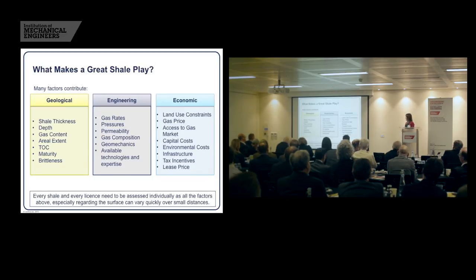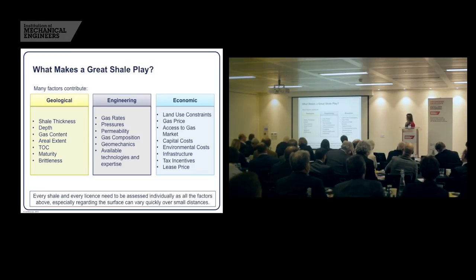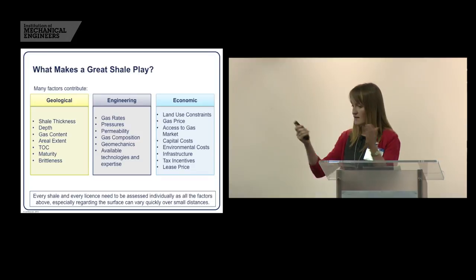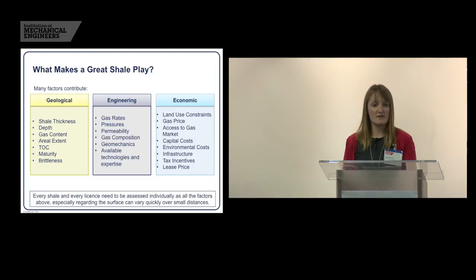So what do we need to make a great shale play? Well, we need a combination of the geological, engineering, and economic factors. I think we've talked a lot today about the economic factors, land use and environmental costs and infrastructure. Engineering, gas rates, pressures, gas composition, geomechanics. Without the right geomechanics in the rocks, you can't make fracks. And then the geology, you've got to have a good shale, nice thick shale, good gas contents spread over a nice wide area that's the right maturity and the right brittleness to frack. And every shale, every license is different. Everywhere has different rock properties. And the UK geology is complex. The UK surface, land surface is complex, land use. So I don't think we can come up with one set of rules that really works for everyone. We have to evaluate everything separately.